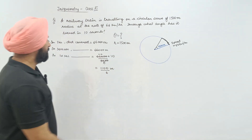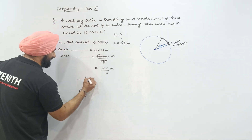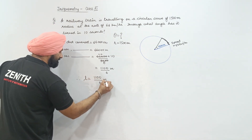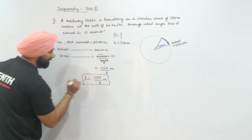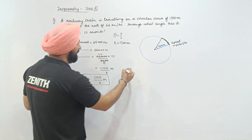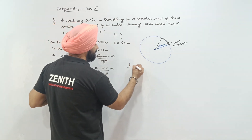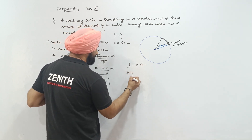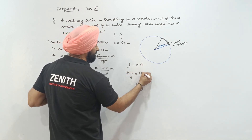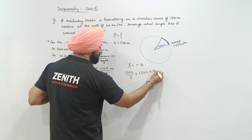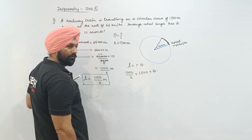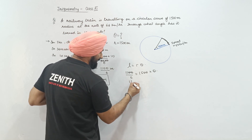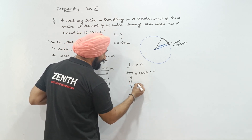In 10 seconds, distance covered is 1100 upon 6 meters. Now applying the formula: arc length equals r times theta. So 1100 upon 6 equals 1500 into theta. Simplifying: theta equals 11 upon 90.